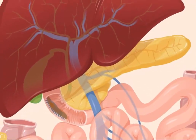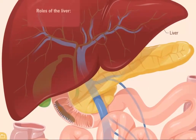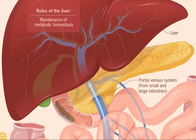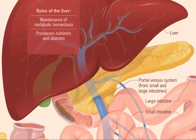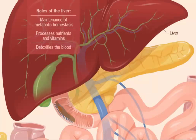Located above and in front of the pancreas, the liver has many roles, including the maintenance of metabolic homeostasis. The liver maintains this because it receives most of the blood flow via the portal venous system from the small and large intestines. This blood contains nutrients absorbed during digestion. The liver processes these nutrients and vitamins and helps detoxify the blood passing through the portal venous system. Another role of the liver is the production of bile, which is a liquid that contains bile salts and other substances. Bile salts emulsify fat within the small intestine.